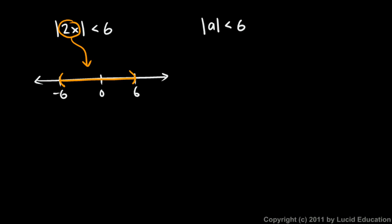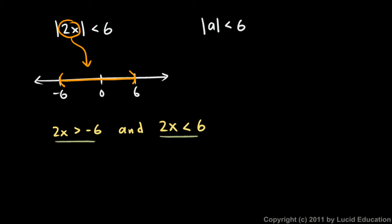Now I can interpret this graph pretty easily. On the left side, this is all the numbers greater than negative 6, to the right of negative 6, and less than positive 6, to the left of positive 6. So that means 2x has to be greater than negative 6, and 2x has to be less than positive 6. Now I have two little inequalities I can solve pretty easily. Just divide by 2, and you get x is greater than negative 3 and x is less than positive 3.